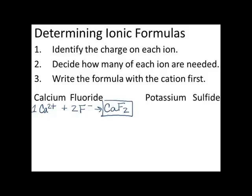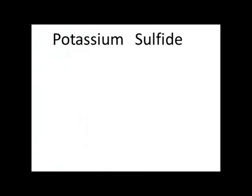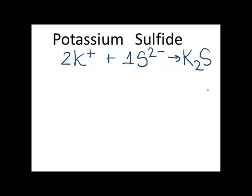Let's try another example: potassium sulfide. Potassium, in group 1, has a 1+ charge, so I write K⁺. Sulfide is derived from sulfur, which is in group 6, so as it forms the sulfide ion it develops a 2- charge. I can't combine one potassium and one sulfide and have them cancel out, so I need twice as much potassium for each sulfide ion. By combining two potassiums with every one sulfide, I arrive at the chemical formula K₂S — two potassiums for each sulfide.